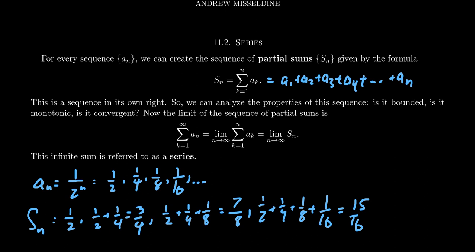So for example, if we take the sequence a sub n right here, this is a bounded, decreasing sequence, which is convergent. It has to be convergent by the monotone convergence theorem. Notice that our sequence a sub n, it'll be bounded between 1 and 0.